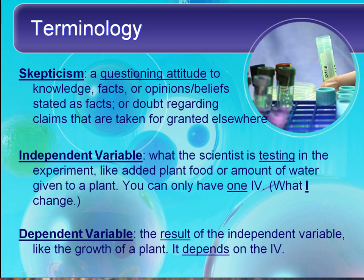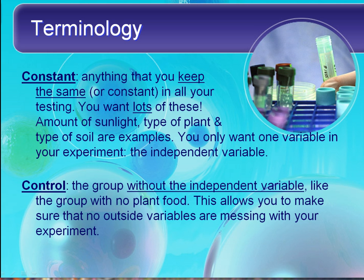Some terminology. Skepticism is important to science — it's a questioning attitude. We don't automatically accept what anybody says is true without evidence. The independent variable is what the scientist is testing in the experiment, like the amount of Miracle-Gro or the amount of water given to a plant. You can only have one independent variable. A way to remember: I think of it as what I change — 'I' for independent. The dependent variable is the result of the independent variable; it depends on the IV. Constants are anything you keep the same in your testing. You want lots of constants and only one variable — the independent variable — and everything else should stay the same.